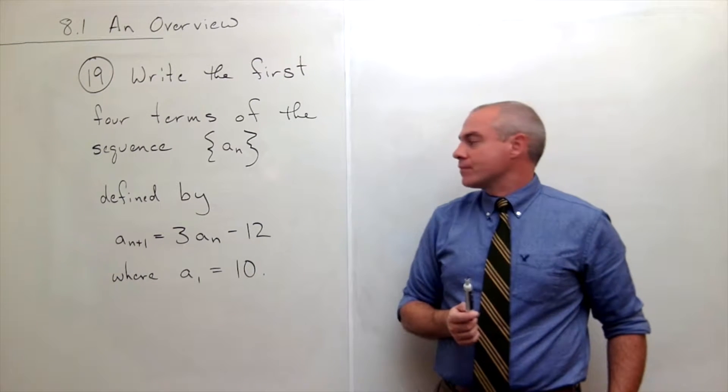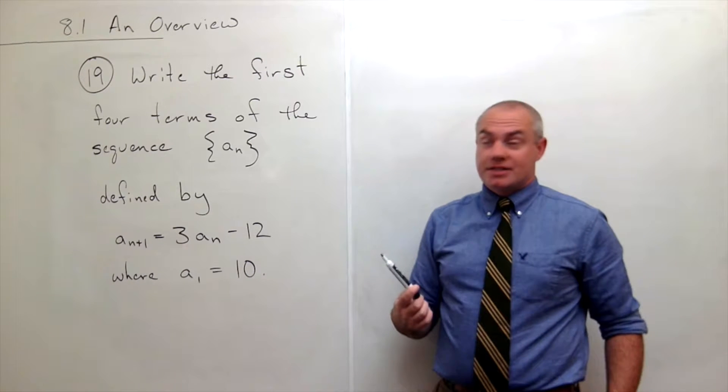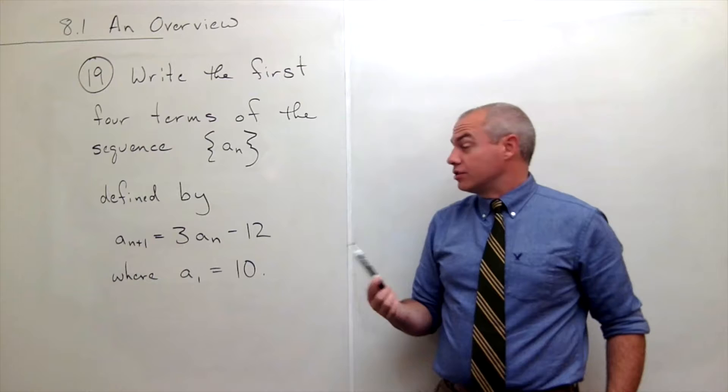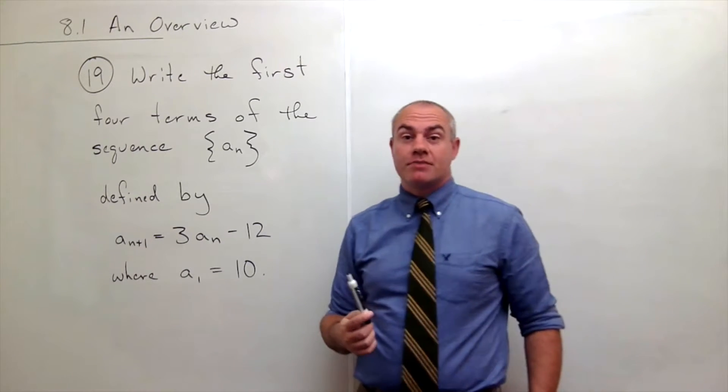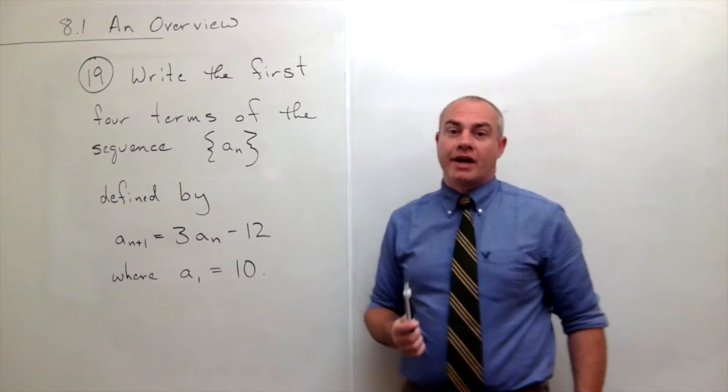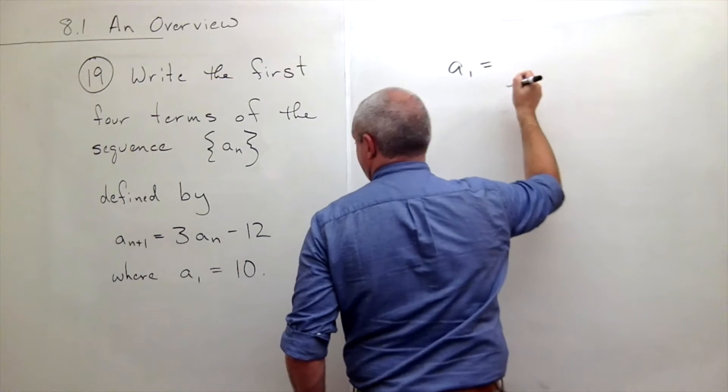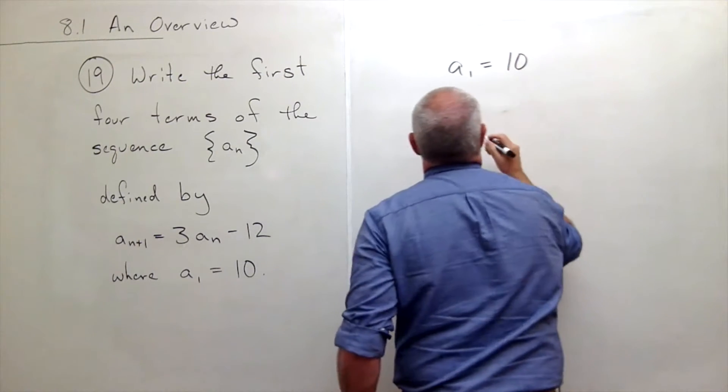So this is a little bit different way to define a sequence but we can still use it to get the first four terms easy enough. In fact the first term is given to us. So a sub 1 we know right off the bat is 10. They tell us that.